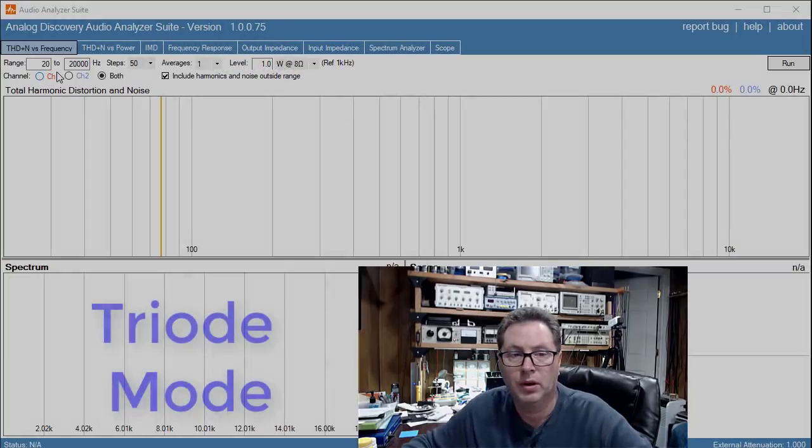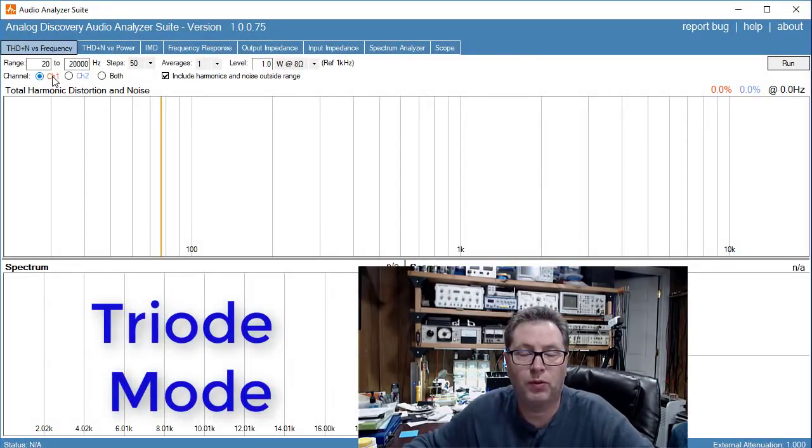This is going to be based on performance testing, ultralinear versus triode mode. I got some questions about that and I was going to do it in the tweaks video, but I thought I'd go ahead and get it out there today. What we're going to do is perform a series of about four or five tests in triode mode right now, and then when we're finished with those, we'll perform the exact same tests in ultralinear mode.